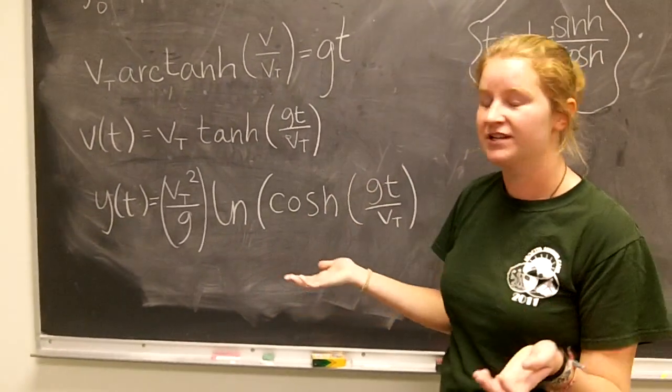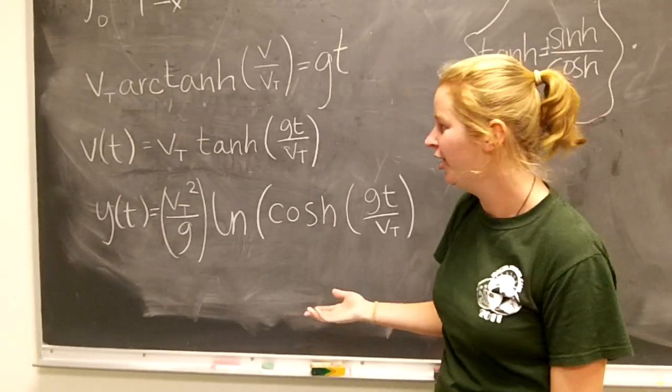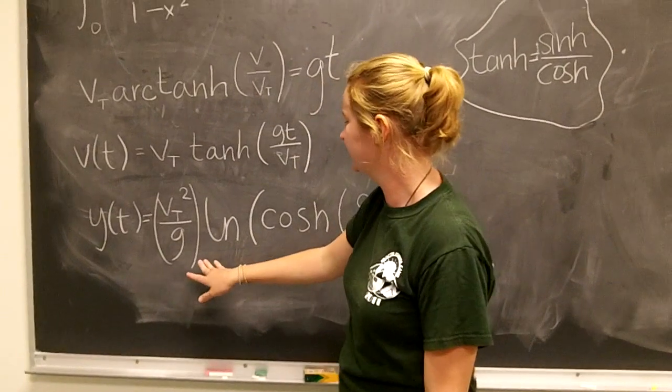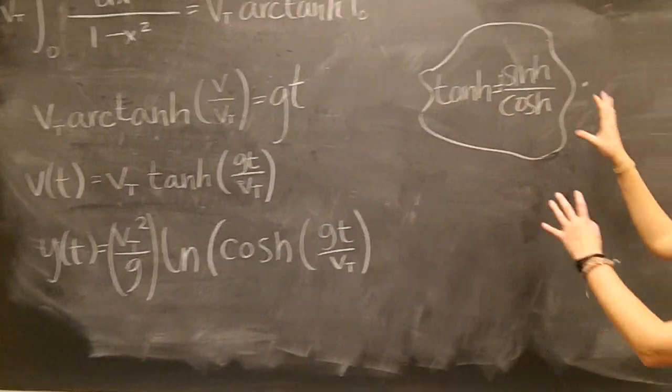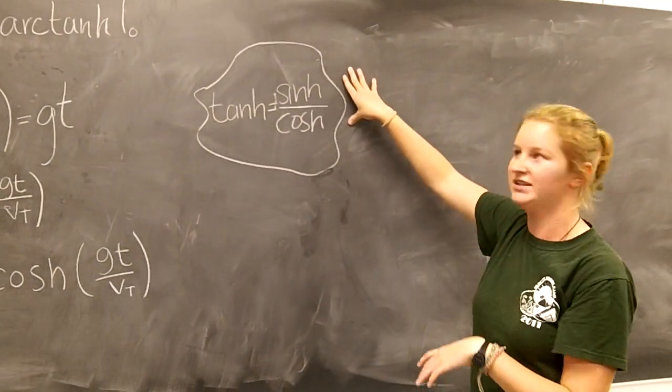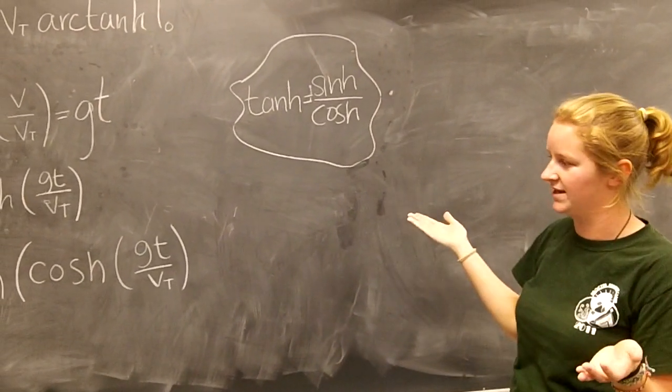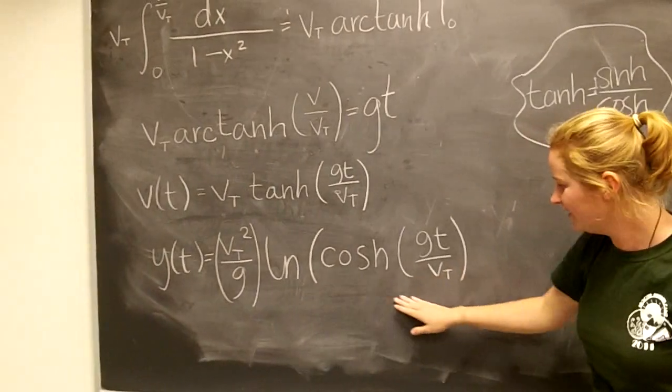And then if you do the integral, which I'm not going to do right here, you can get the position as a function of time. And just keep in mind that the hyperbolic tangent is just the hyperbolic sine over the hyperbolic cosine, just like you would intuitively think. So this is what you get.